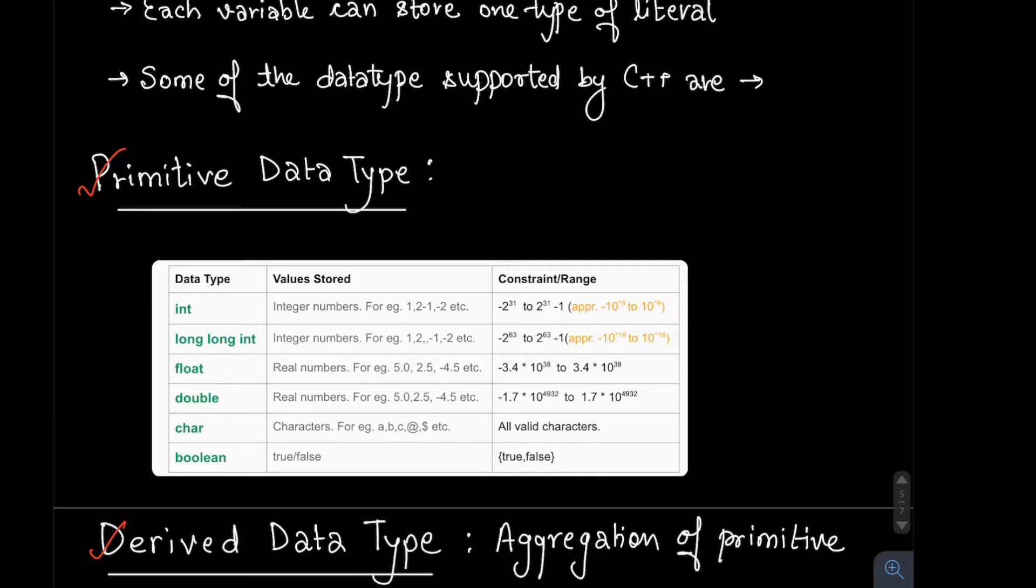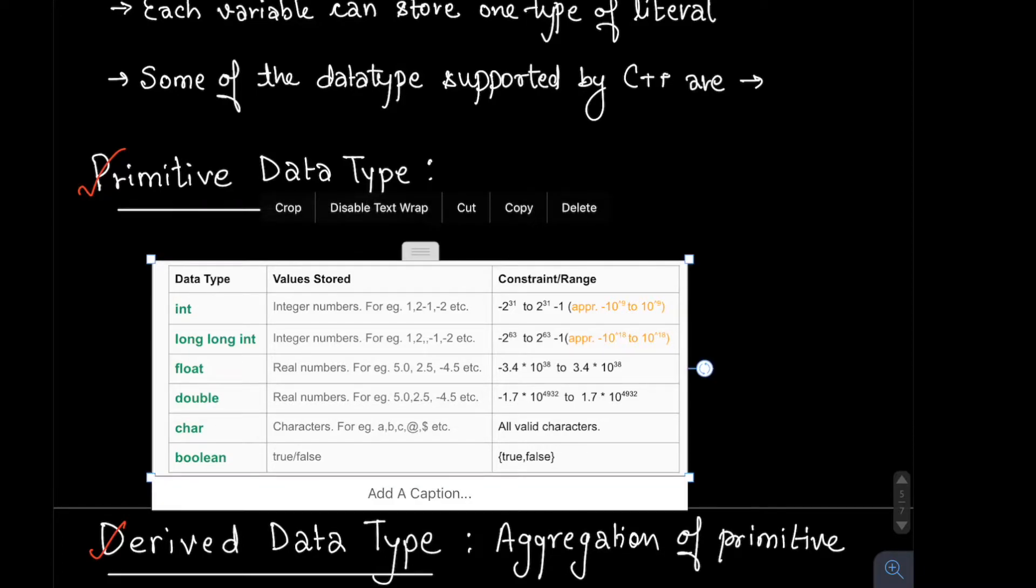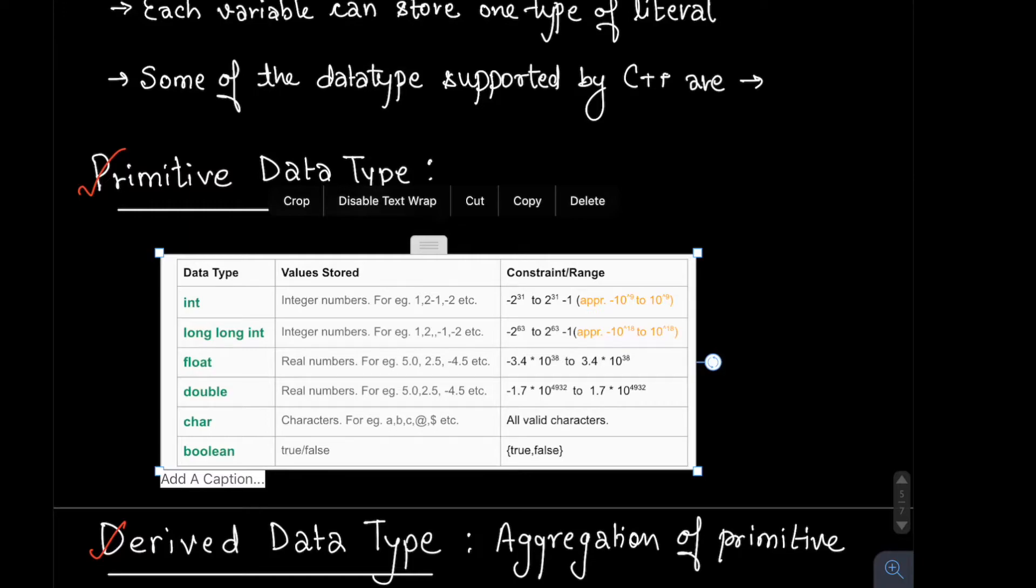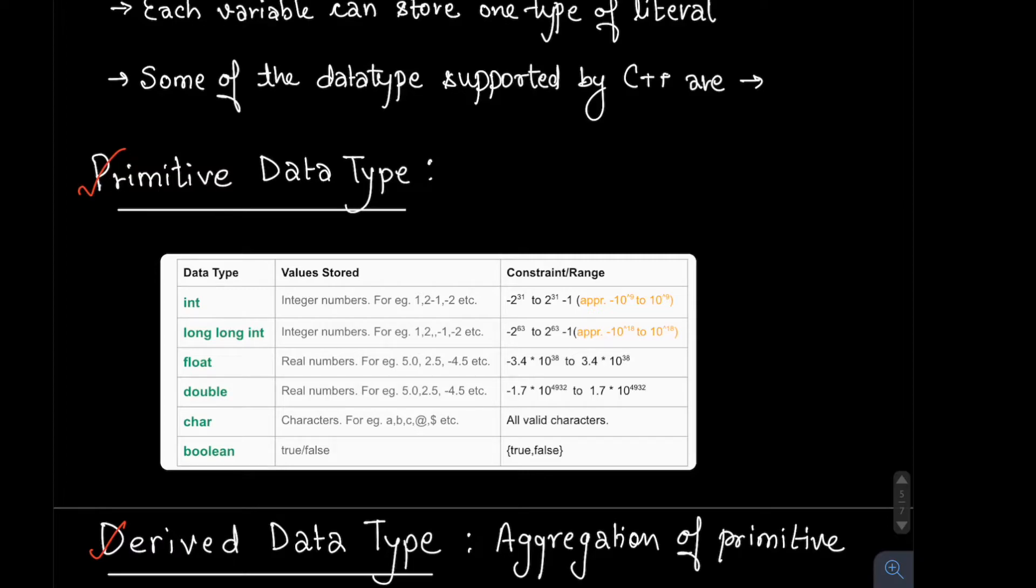For example, in the table you can see that integer has a constraint or range associated with it. An integer data type can only store a value between 10 to the power minus 10 to the power 9 to 10 to the power positive 10 to the power 9.